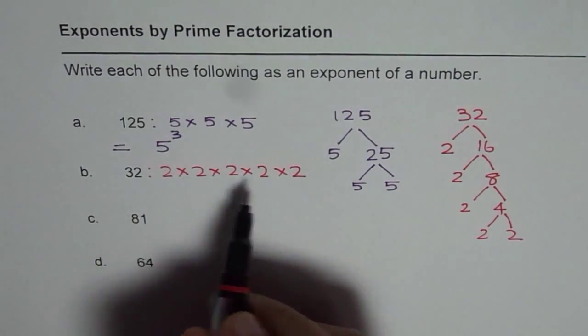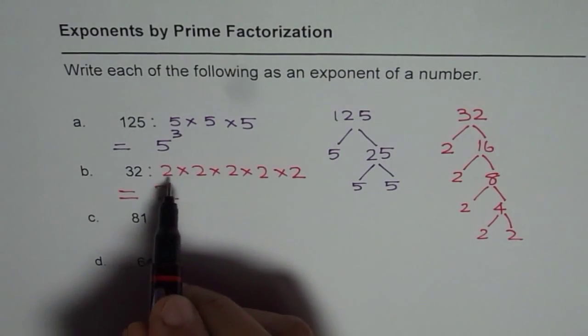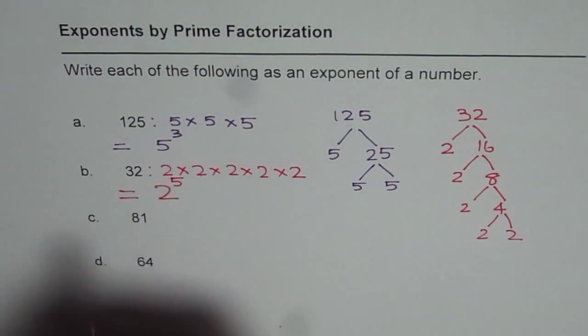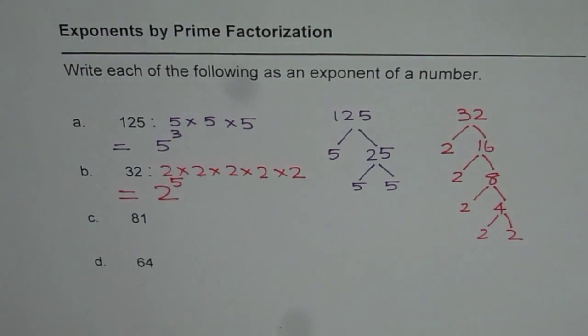We get base as 2, so in this case we can write this as 2 is the base, 1, 2, 3, 4, 5, exponent is 5. So 2 to the power of 5 is indeed 32, right? Let's do another one.